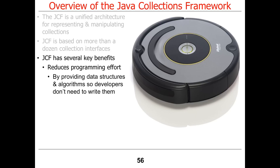There are a couple of benefits to having this collections framework. One benefit is it reduces your programming effort — you still have to learn all these things, but you don't have to write them. That's what we would call a labor-saving device, like a Roomba. You don't have to push the vacuum cleaner around. We went to a place in India — a really cool palace — and on the lawn, there were women in their 60s and 70s cutting grass with scissors.